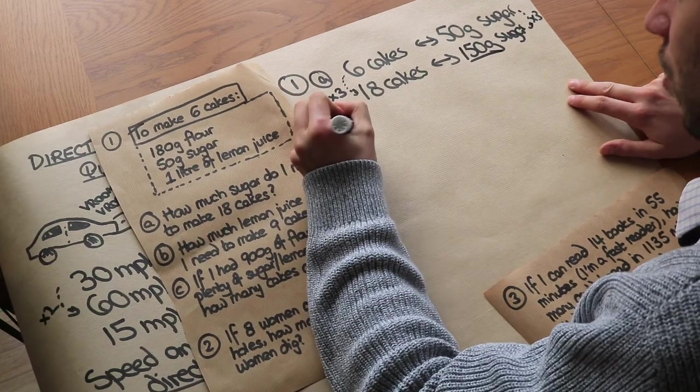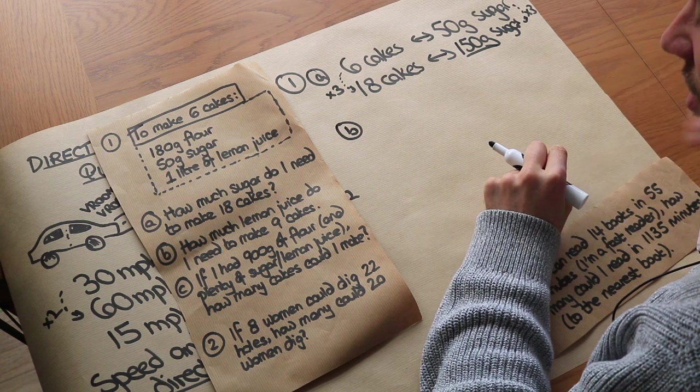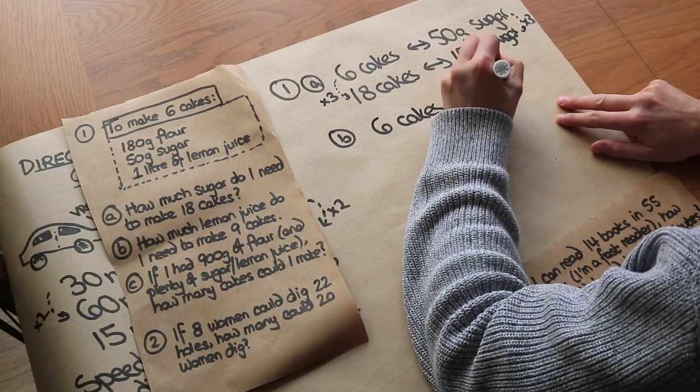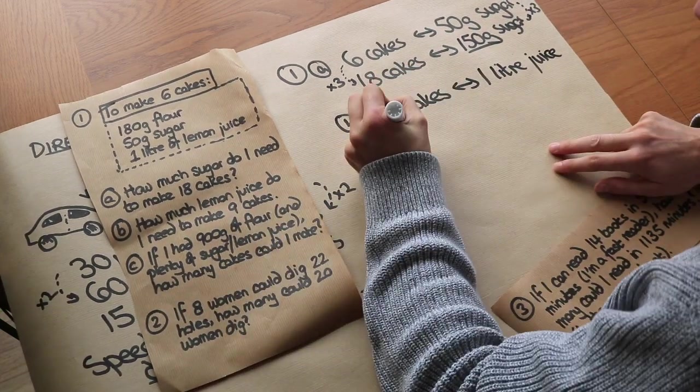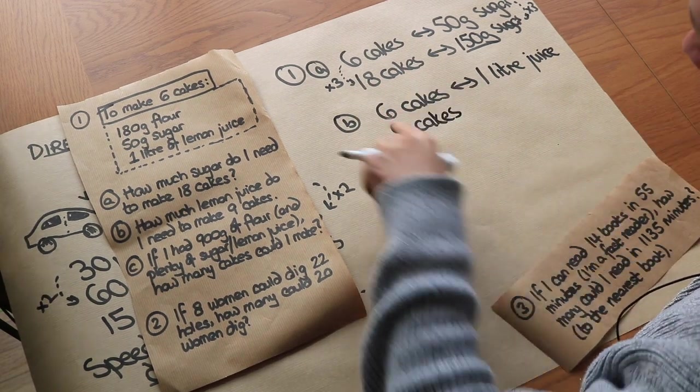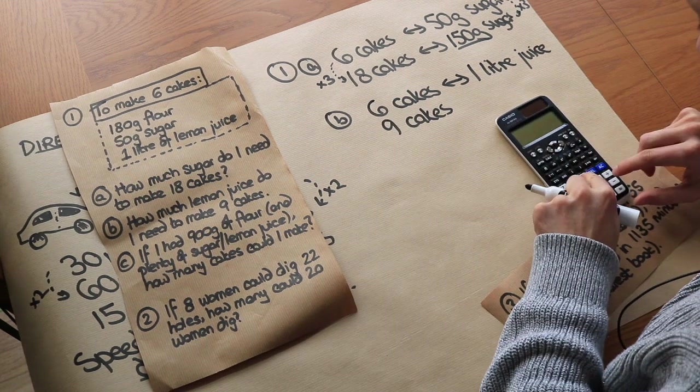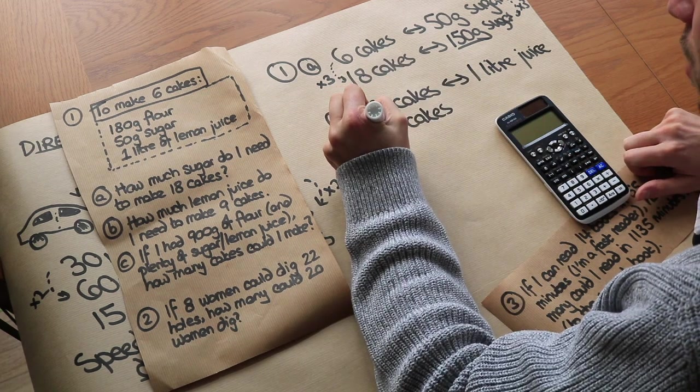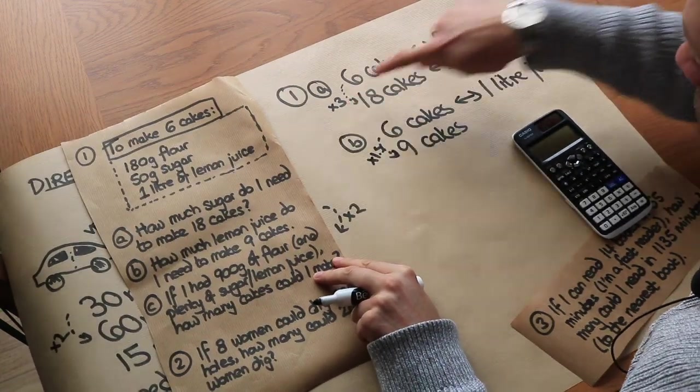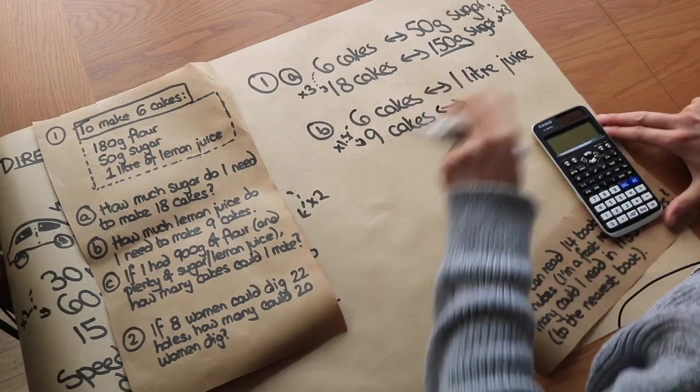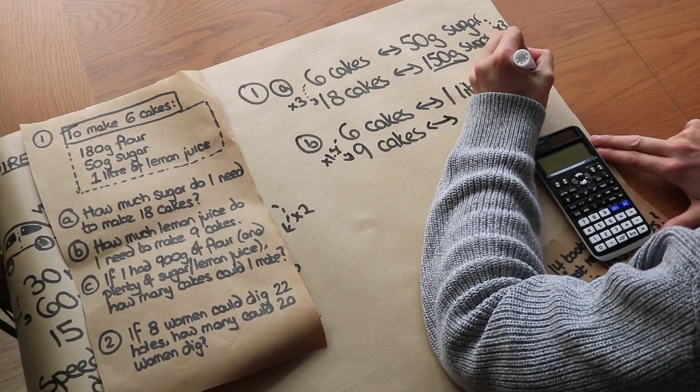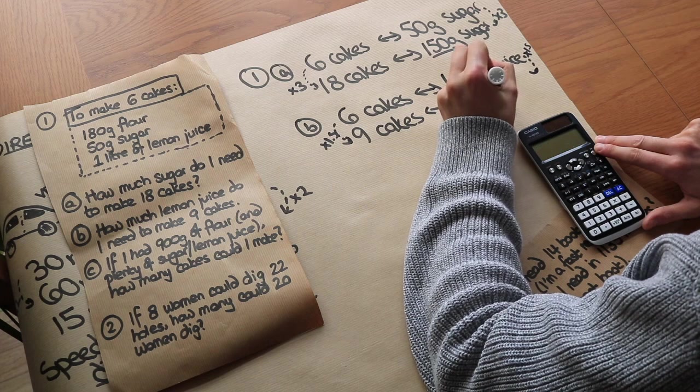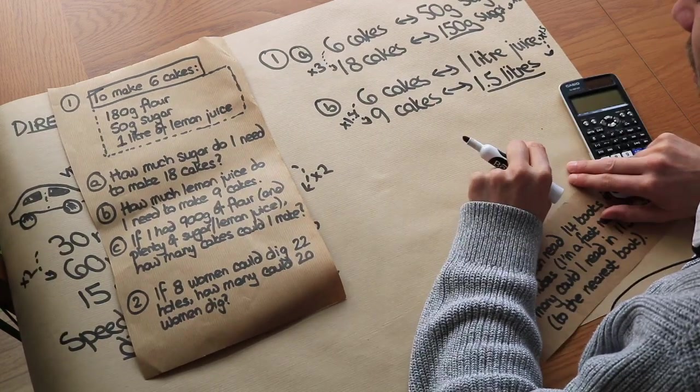What about part b: how much lemon juice do I need to make 9 cakes? Well, we know that 6 cakes requires 1 liter of juice, and we want to work out 9 cakes. Now if we had a calculator, we could work out this scaling by dividing these numbers. So if we do 9 divided by 6 to work out how many times bigger 9 is than 6, that will give us 1.5, so it's 1.5 times bigger. And that means we need 1.5 times more juice. So if we times this by 1.5, 1 times 1.5 is just 1.5, so there'd be 1.5 liters of juice needed.